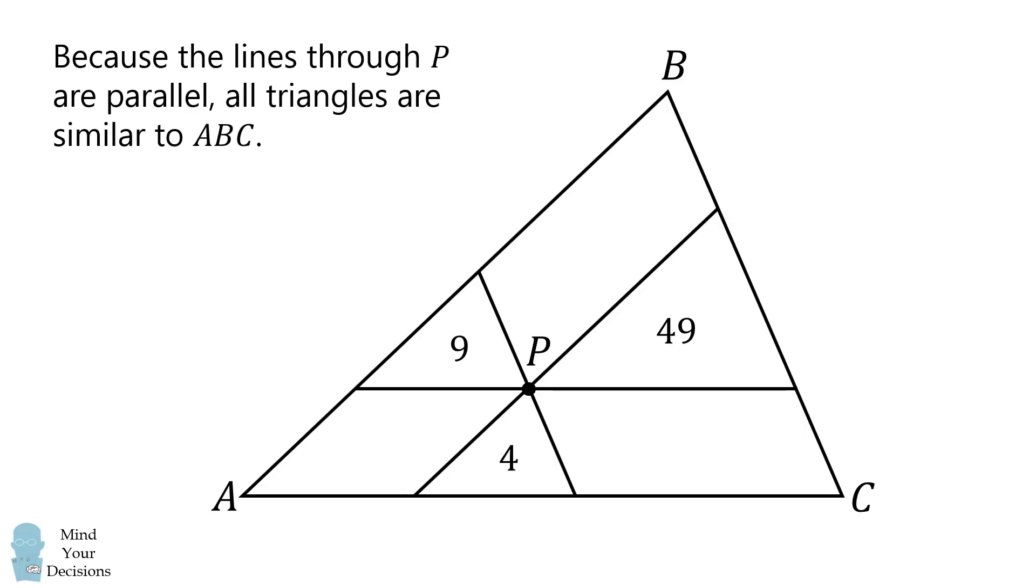Because the lines through P are parallel, all triangles are similar to each other, and they're similar to ABC.